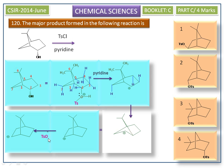The p-toluenesulfonic acid attacks the carbocation at the axial position, giving the tosylated bicyclic compound. This product matches the second option, so the correct answer is option number 2.